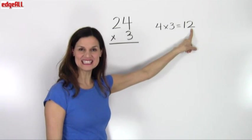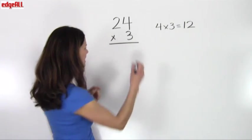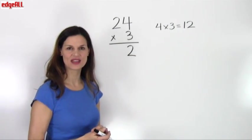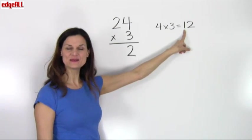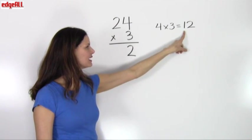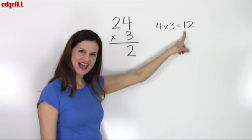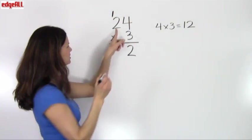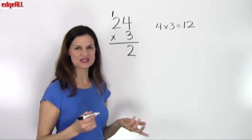What I do is I take the digit that's in the ones place position of my product — the 2 — and I write that here in the ones place of the final answer. I take the 1 that is in the tens place of my 12, and I write it right above the 2 here in the tens column. Then I proceed with my work.